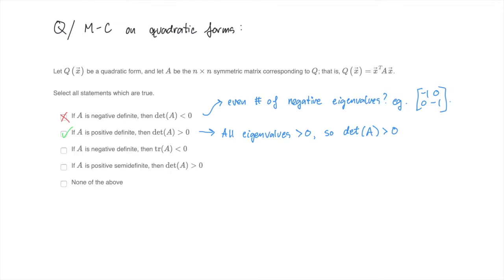Moving on to the third one, suppose that A is negative definite. Is it true that the trace of A is negative? This one is true, and it's similar to the first one that we did. If all eigenvalues are negative, then since the trace is just the sum of those eigenvalues, the trace is also negative. So this statement is true.